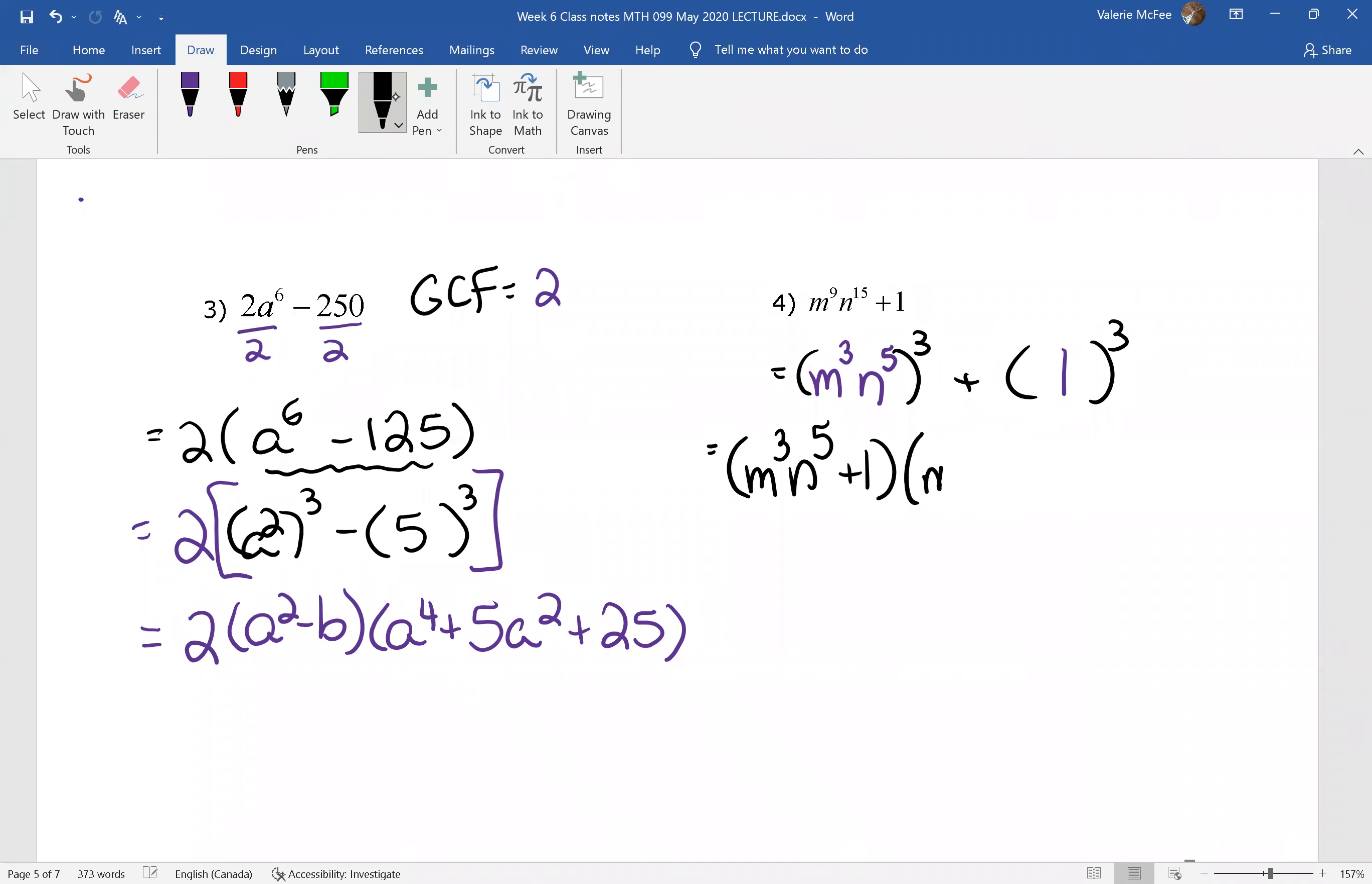a². That's going to be m⁶n¹⁰. Here's the minus sign for that formula. a times b. m³n⁵.